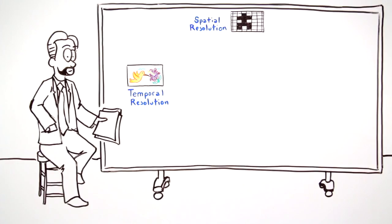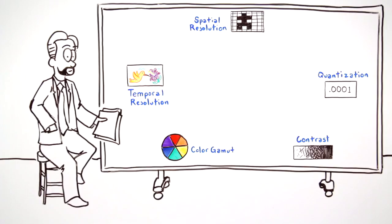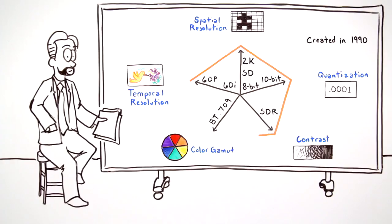The technology behind gorgeous images involves five key imaging parameters: temporal resolution, spatial resolution, quantization, contrast, and color gamut. In 1990, all of these parameters were incorporated into the international standard for HDTV, BT-709.